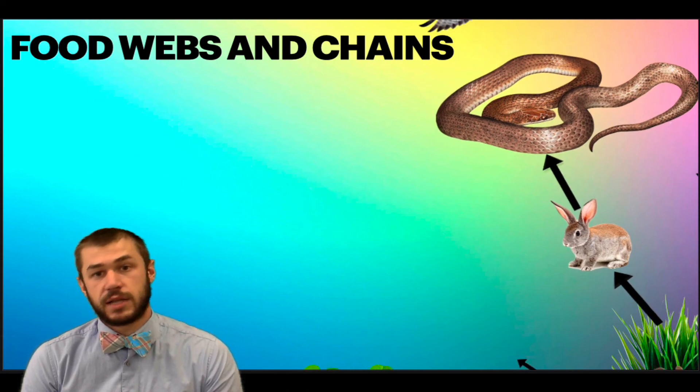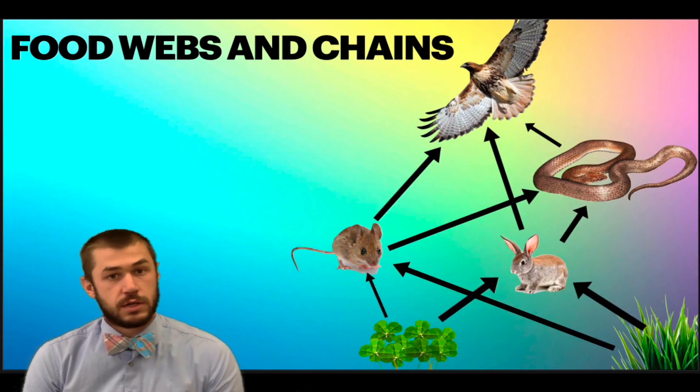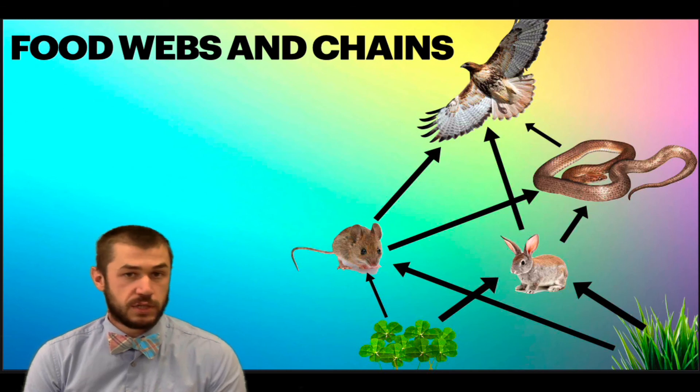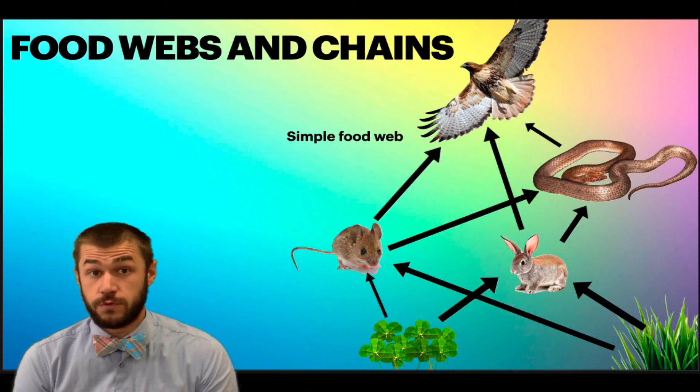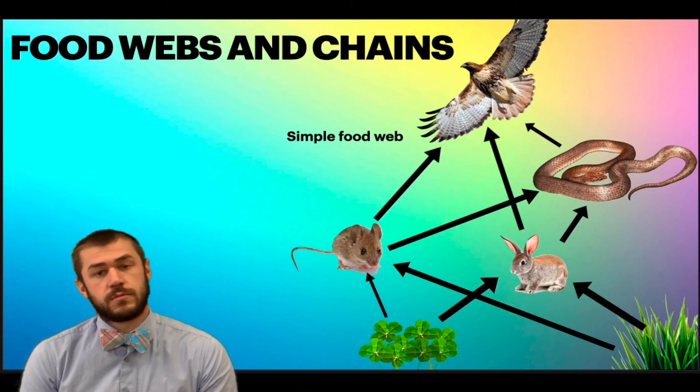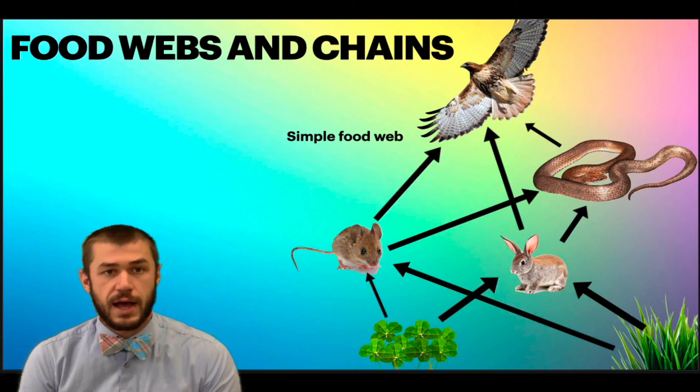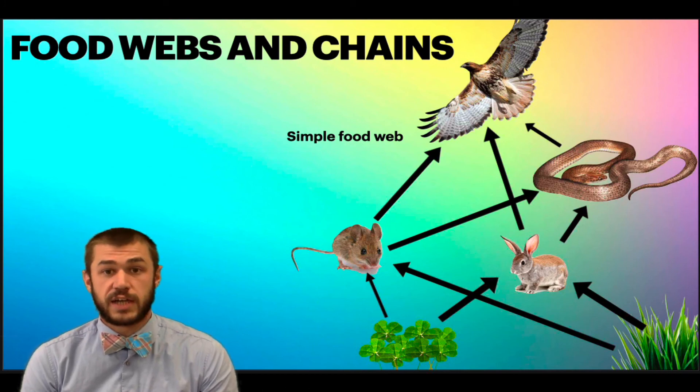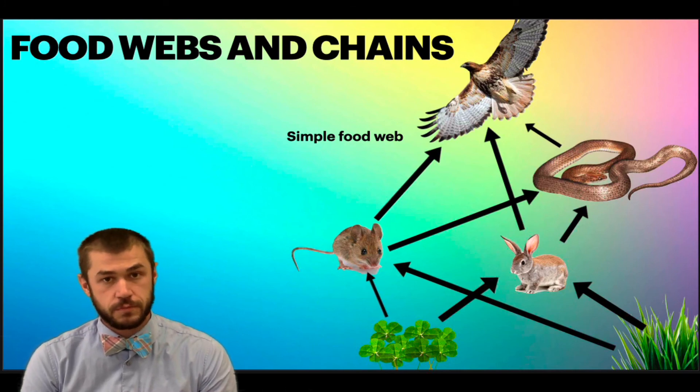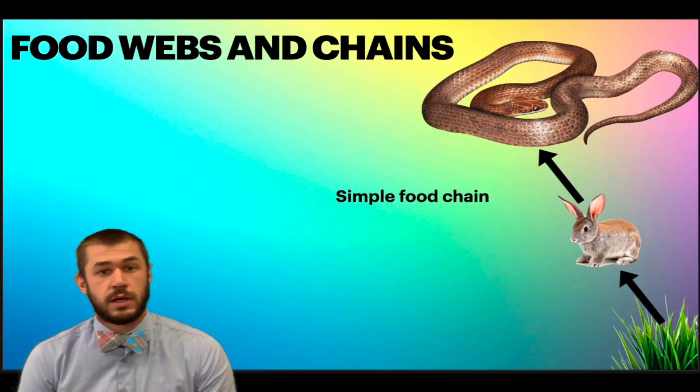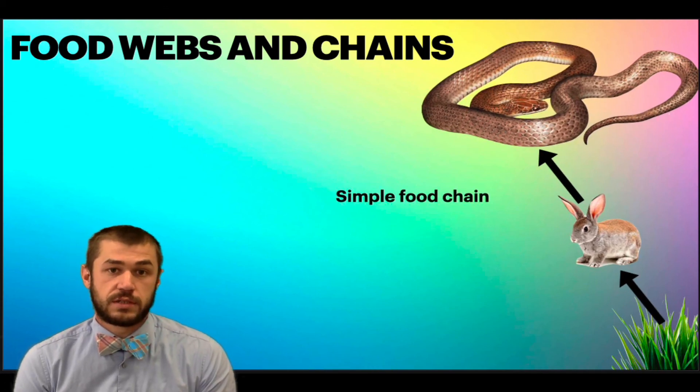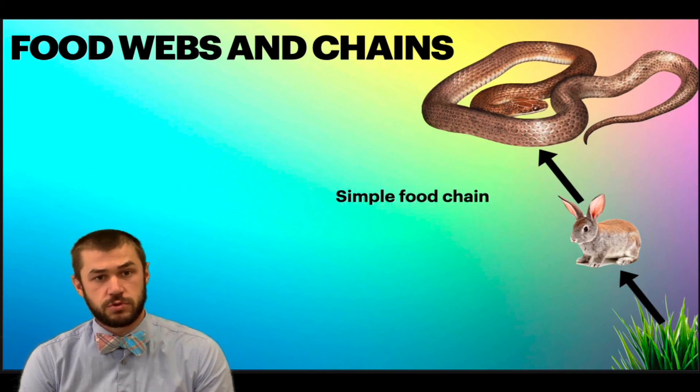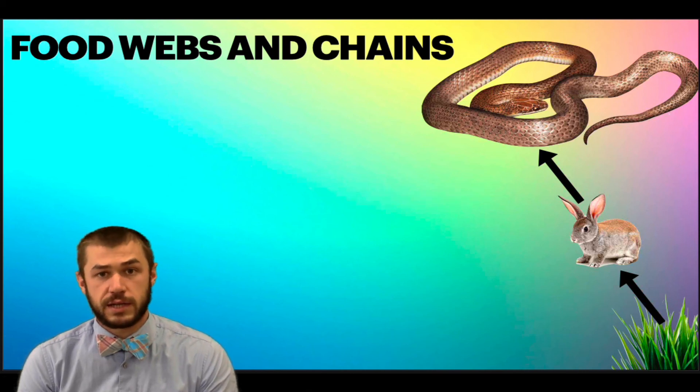Ecosystems are much more complex than that though. So this would be an example of a really simple food web. This is closer to what we might actually see as we look at an ecosystem and the interactions between the species within it. It is, however, often helpful to look at these simple food chains in order to illustrate more complex topics.